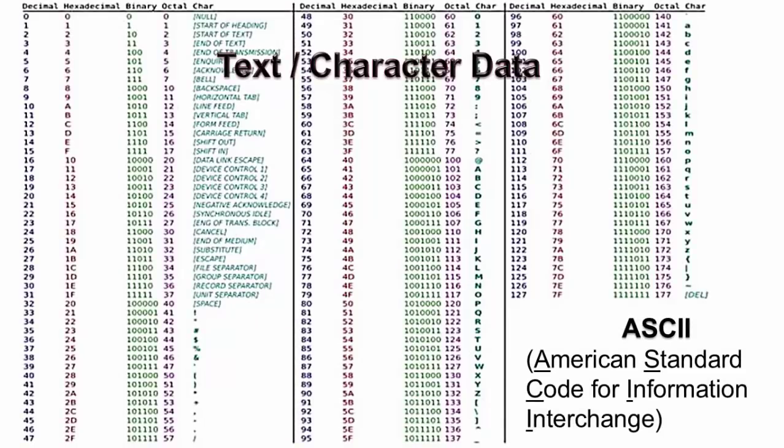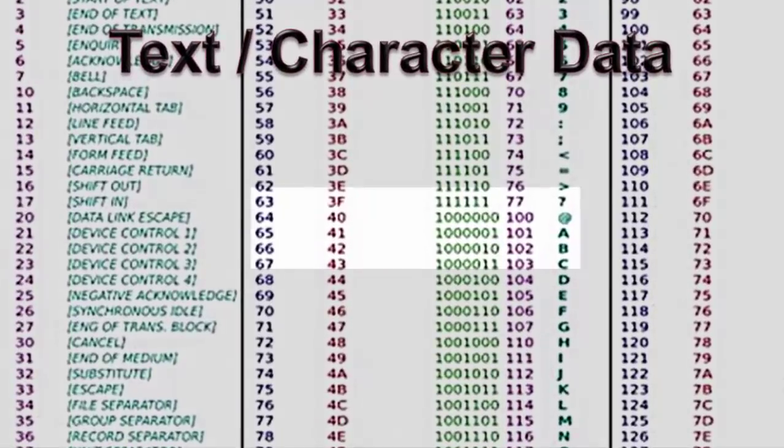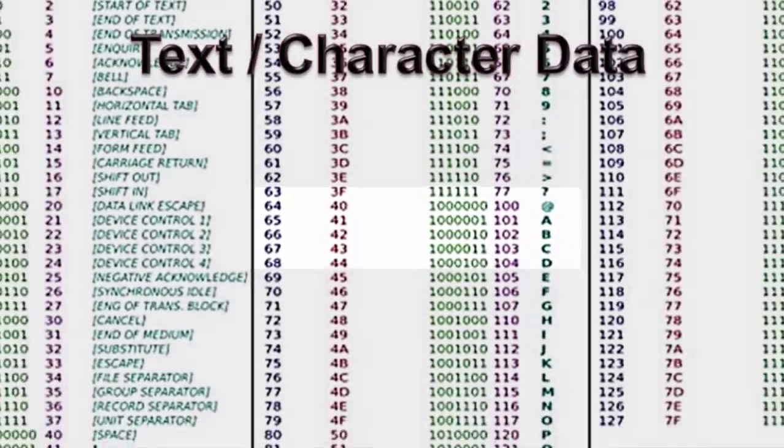Now let us see how to form a character. American Standard Code for Information Interchange, that is ASCII, has given a table which tells us how to read binary data as character. Let us see what happens at the time of reading a binary number in a Python program.